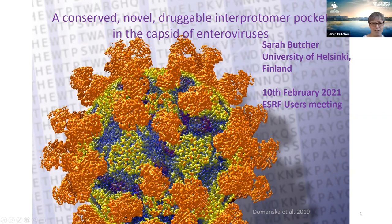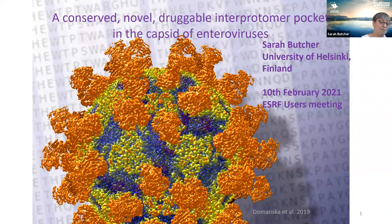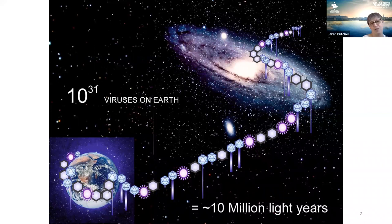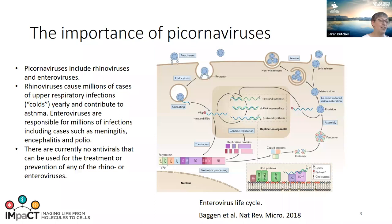One of our favourite viruses is human parecovirus, which is shown here with a neutralising antibody. Although currently we may feel like there is only one virus on Earth, there are many more. Roger Hendricks estimated that there were 10 to the power of 31 viruses on Earth, which if you stretch them end to end would actually stretch 10 million light years.